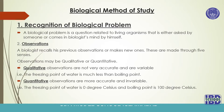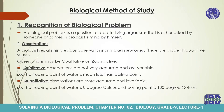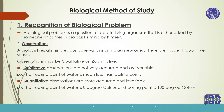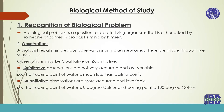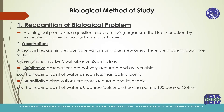The next step is observation. A biologist recalls previous observations or makes new ones. These are made through the five senses: the sense of touch, the sense of hearing, the sense of smell, the sense of sight, and the sense of taste. With these five senses we can make observations about the problem recognized in the first step. Observations may be qualitative or quantitative. Qualitative observations are not very accurate and are variable — for example, the freezing point of water is much less than the boiling point.